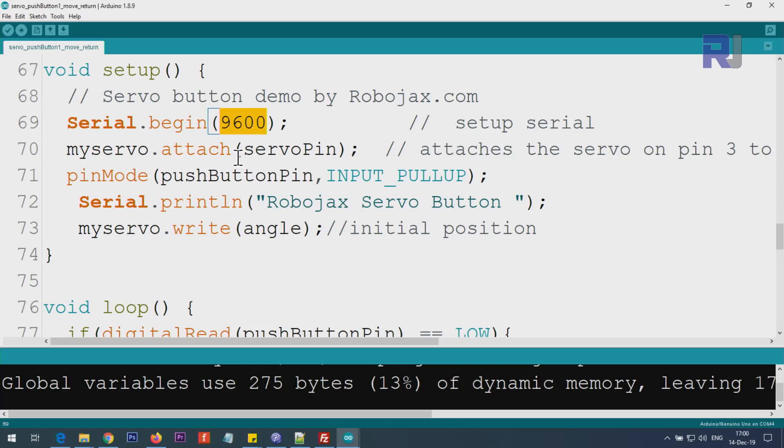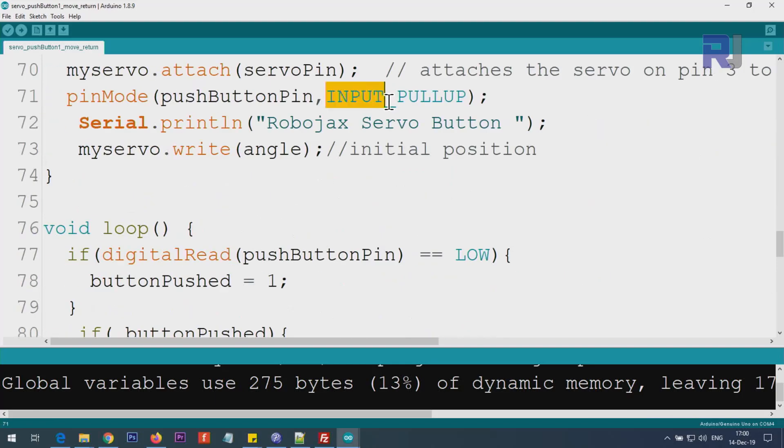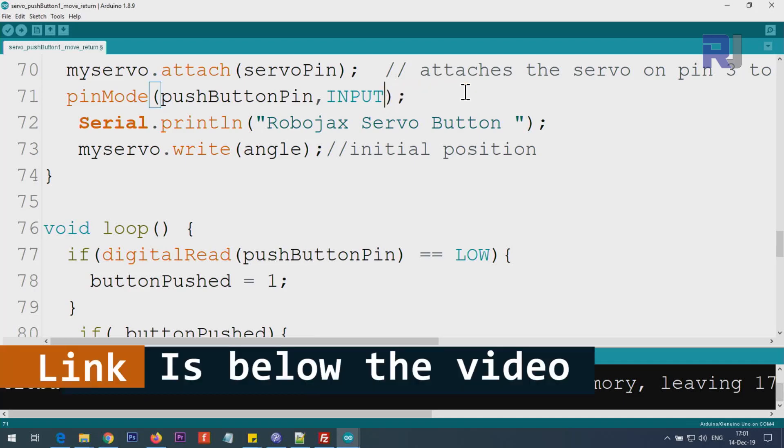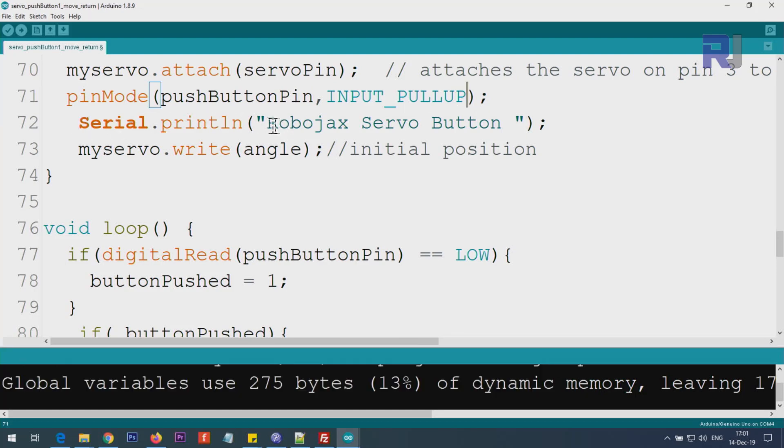myservo.attach(servoPin)—this is as if I type 3 here, so pin 3 will be assigned to the servo. pinMode(pushButtonPin)—this is pin 2, this is as if I type 2, we have defined it here. We're defining this pin as an input, but I'm using also pull-up. The pull-up job is to eliminate usage of resistor. When the button is not pressed, it always pulls it up or pulls it to 5 volts. A separate video explaining that. If you do not use this pull-up or just use INPUT, you need to use a resistor.